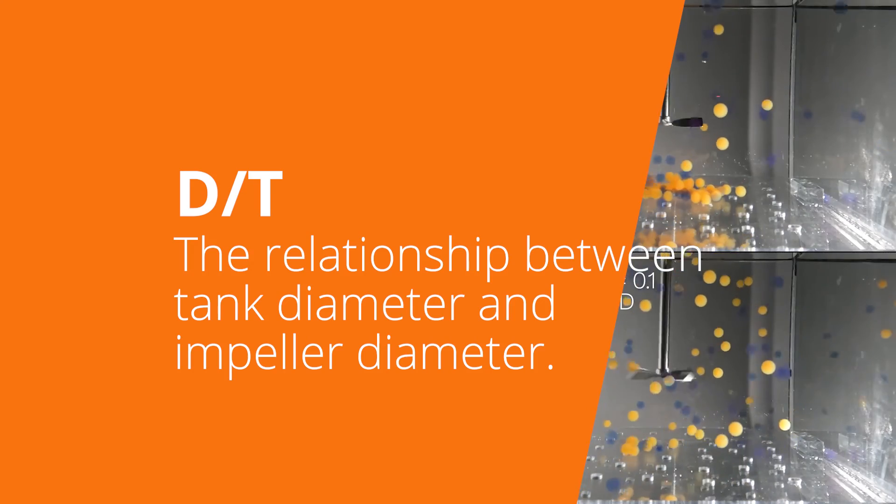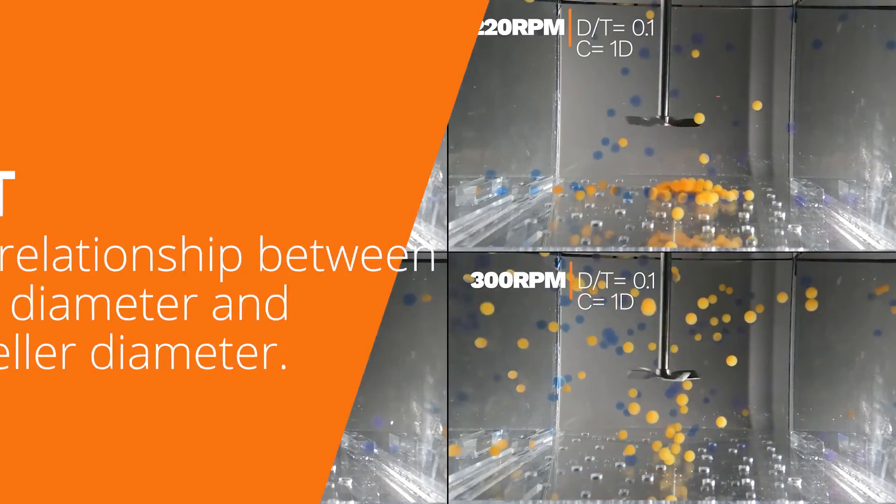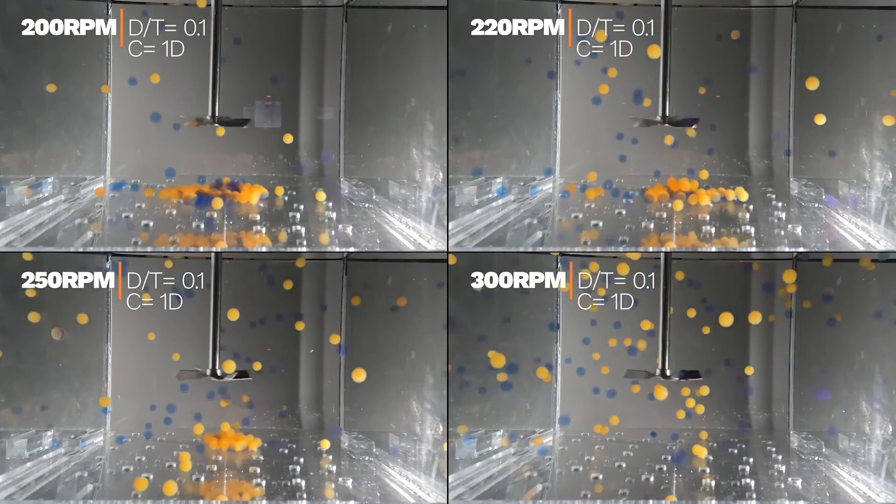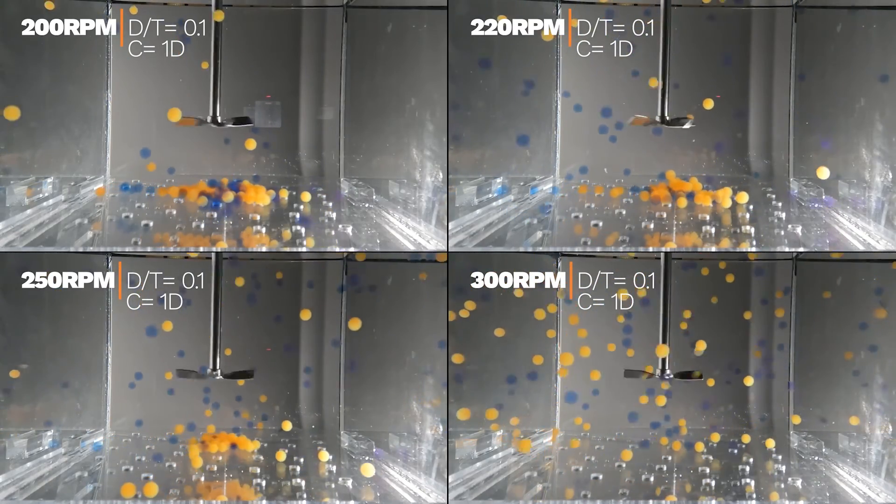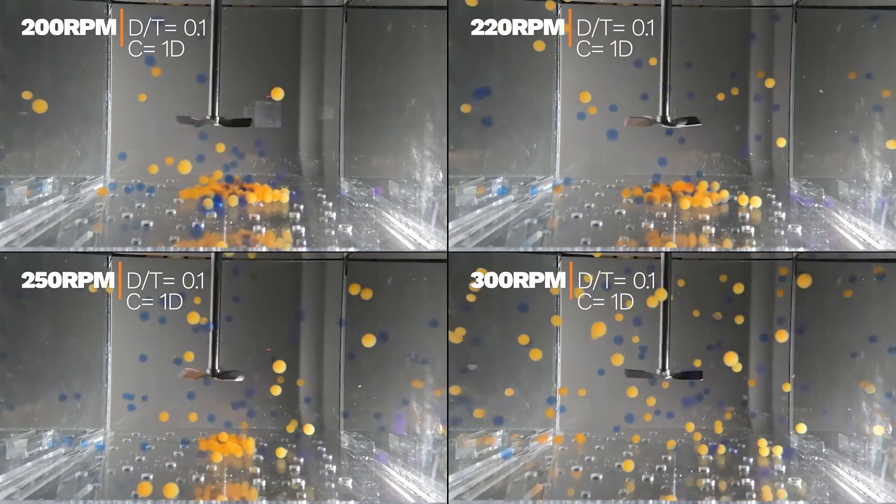The second is the relationship between the tank diameter and the impeller diameter. Generally, a small impeller will produce less mixing than a large impeller, but if your impeller is too large, that will also hinder agitation.